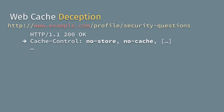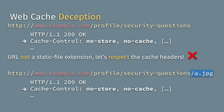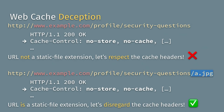Imagine example.com has an endpoint at /profile/security-questions. The server sends back a Cache-Control: no-store header telling browsers and cache servers not to cache this sensitive data. Since the URL isn't a static file extension like .jpeg, the cache server respects this. But if you add .jpeg to the end of the URL, the application server still says don't cache this — however, the cache server sometimes thinks it knows better and caches it anyway because it sees a .jpeg extension.